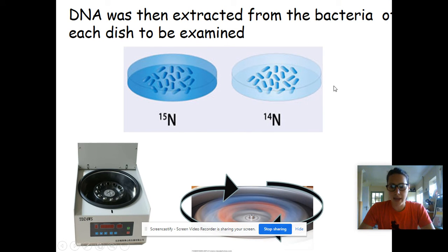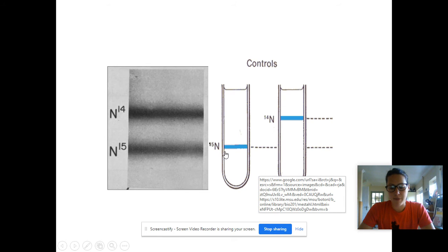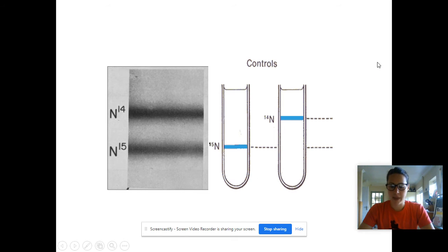And once you've done that, you can then extract the DNA from these bacteria. And that extracted DNA can then be put into a centrifuge. It can be whizzed up, and you would end up with something like this, that the bacteria that have been grown in the N15 would have a band which would appear lower down than the bacteria that had been grown in the N14. And these two tubes here can then act as our control to compare the experiments which are done later too.